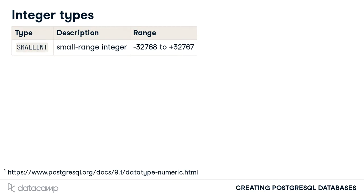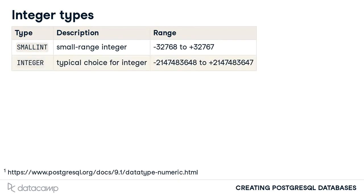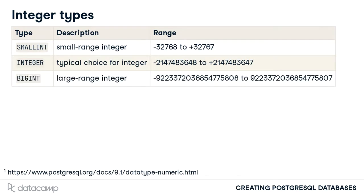The smallint type would be useful in the case that we wanted to store a person's age in whole numbers, due to the small range of possible values. We used the integer type previously to represent the number of sales in our employee table. The integer type would also be appropriate for a table column representing the population of large cities. The bigint type could be used to represent the number of credit card transactions processed in a year for Visa or MasterCard.